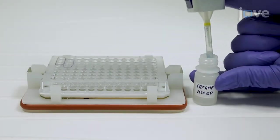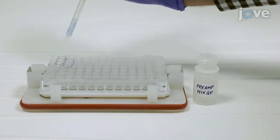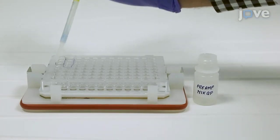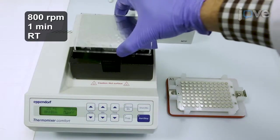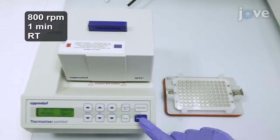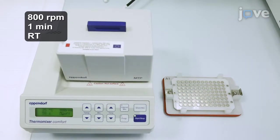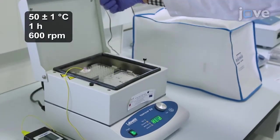After removing the last wash, reload the wells with 50 microliters of the pre-amplifier reagent. Then seal the plate with an aluminum plate sealer and shake the plate at 800 rpm for one minute at room temperature. Then continue shaking the plate at 50 degrees Celsius for an hour.